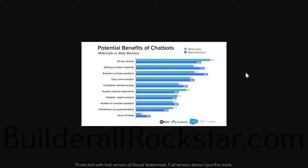People are also happy that chatbots answer their simple questions, and sometimes complicated questions as well. You can set up chatbots to answer lots of different things in lots of different ways and direct people to videos and other material to help them get the answers they're looking for. People are also happy with the easy communication, quick resolution of complaints, good customer experience, detailed and expert answers, and the friendliness and approachability of chatbots. You can make your chatbot as friendly and approachable as you want, or serious and to the point — it entirely depends on what personality you want to give your bot.